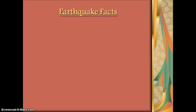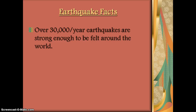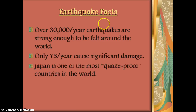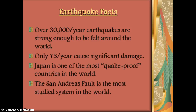Some earthquake fun facts. About 30,000 earthquakes a year are strong enough around the world for people to actually feel. Only about 75 each year cause any significant damage. And Japan is one of the most earthquake-proof countries in the world — they have a lot of earthquakes, so they should be very well prepared for them. And lastly, the San Andreas Fault in California is the most studied fault system in the world. It's very visible at the surface, making it very easy to examine and study.